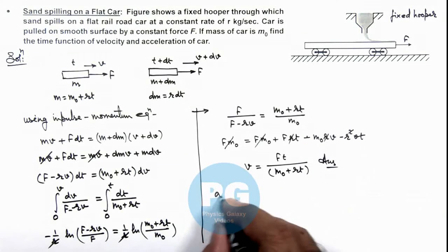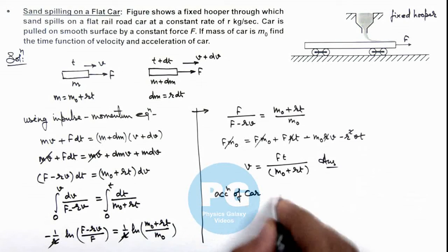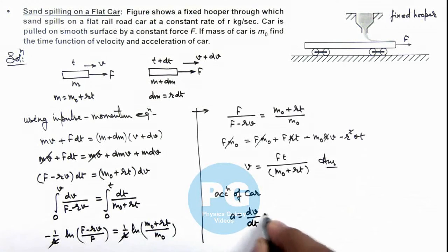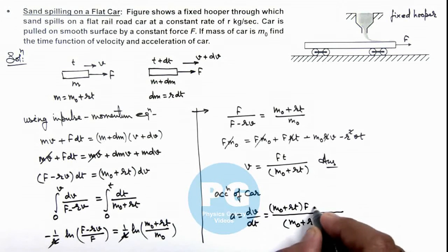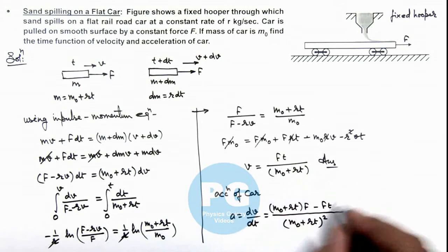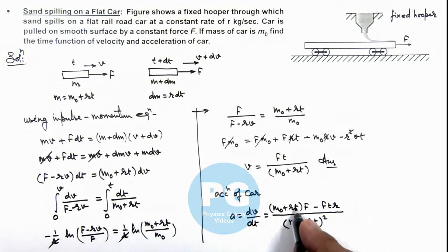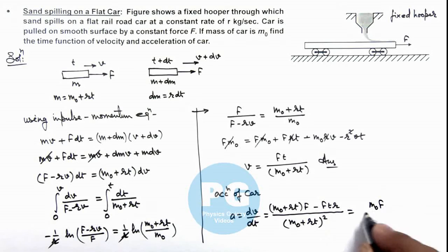And acceleration of this cart can be given as dv by dt. If you differentiate it by using quotient rule, we can write in denominator square which is (m₀ plus rt)², and in numerator we can use (m₀ plus rt) multiplied by differentiation of numerator which is F, minus Ft multiplied by differentiation of this denominator which is r. So here rt F, Ft r gets cancelled out. The result we are getting is m₀F divided by (m₀ plus rt)² - this is another answer for the problem, the acceleration of cart.